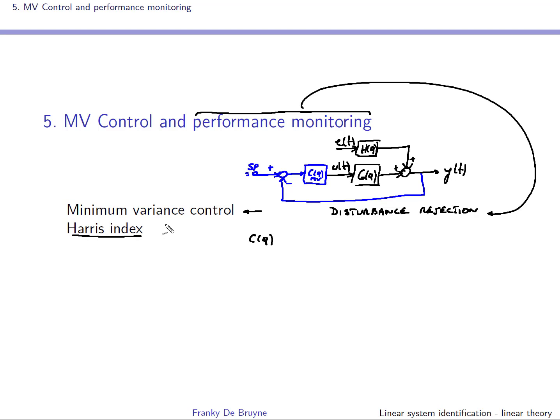The ARIS index is a number between 0 and 1. If you have 1, you have the optimal minimum variance control. If you have 0, the performance is really, really bad when you compare with this optimal minimum variance control. Remember, this is in disturbance rejection.